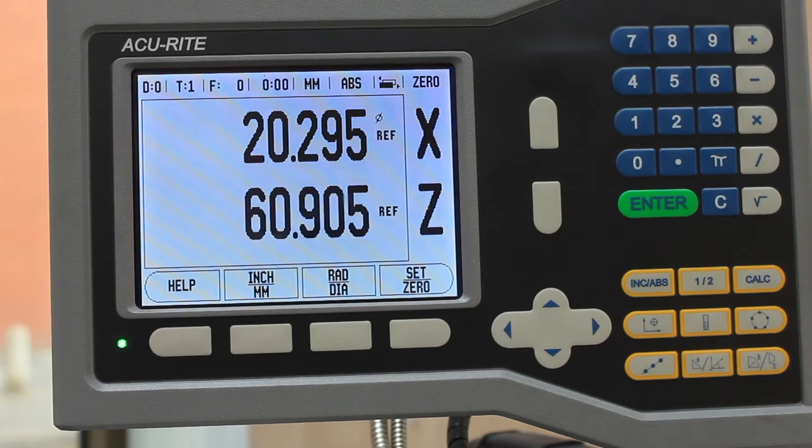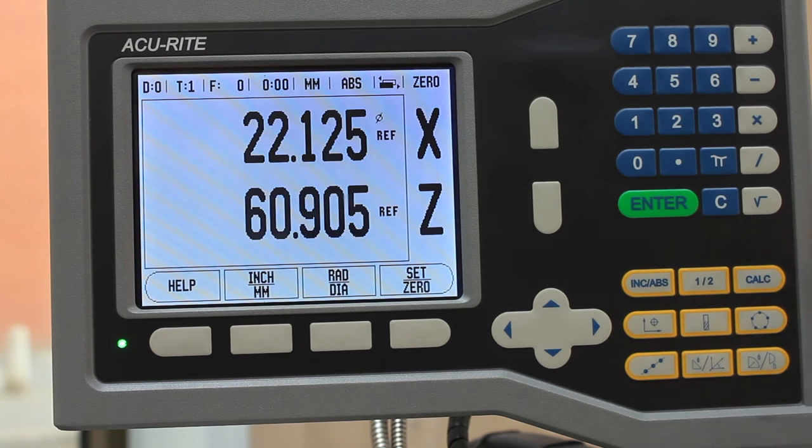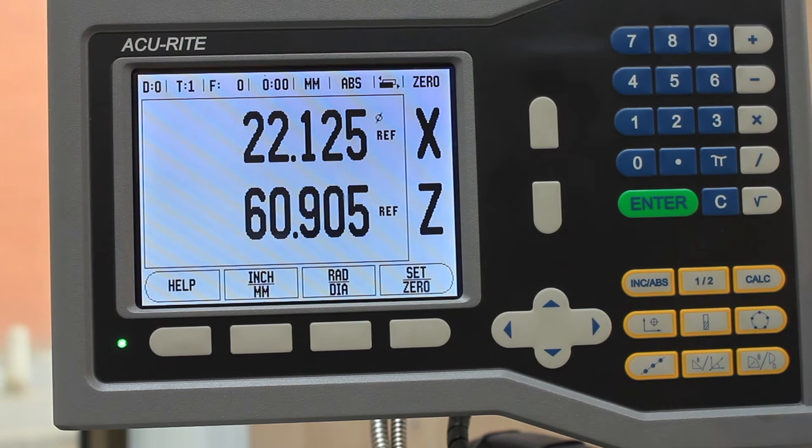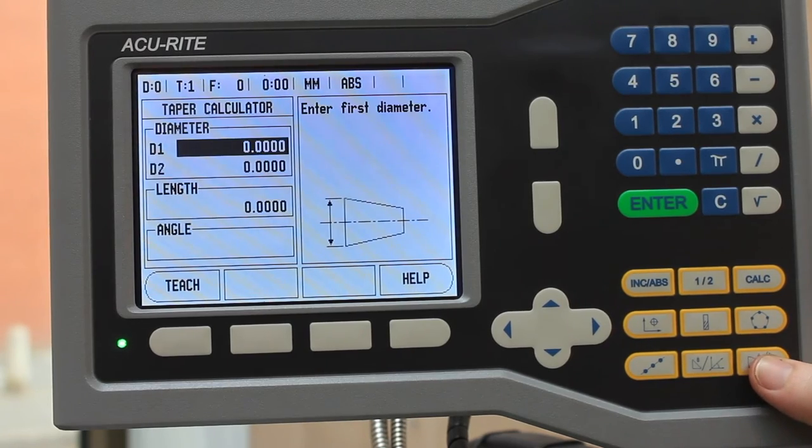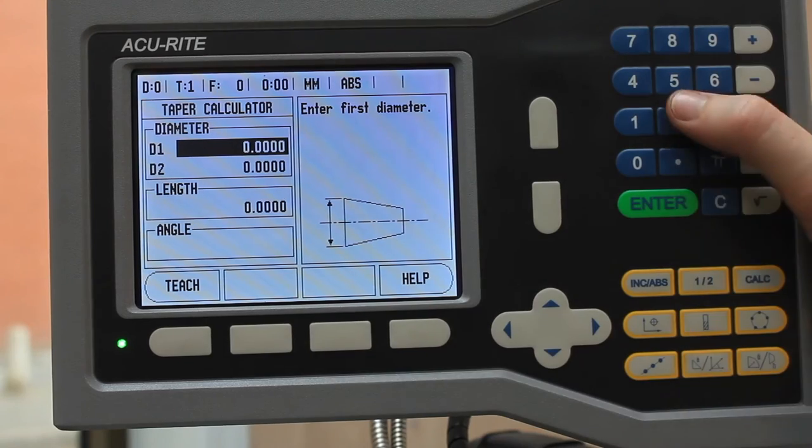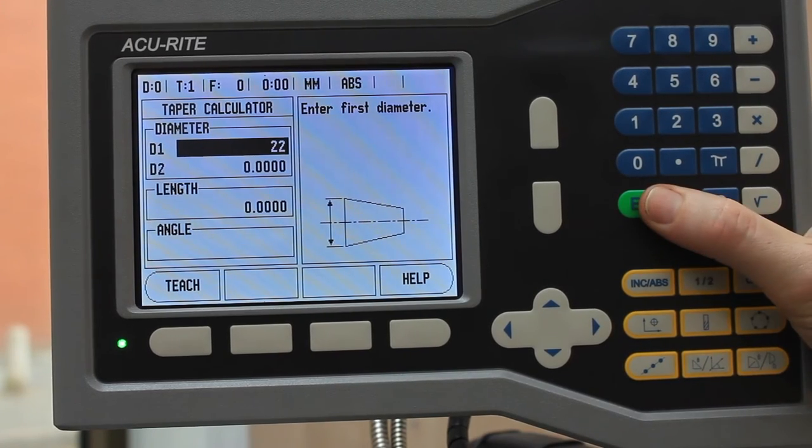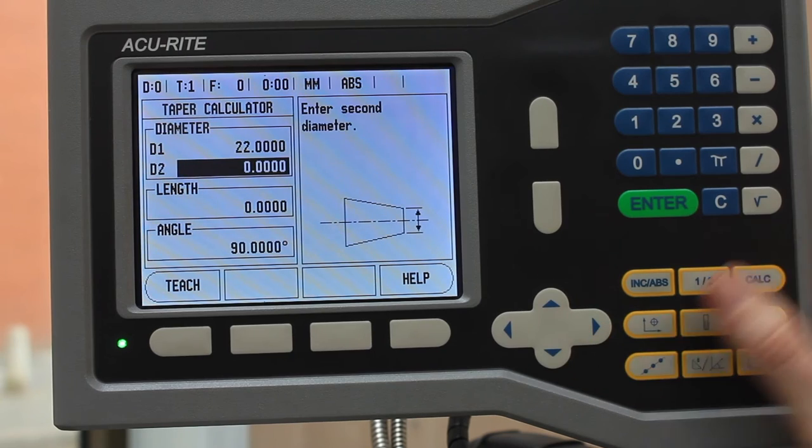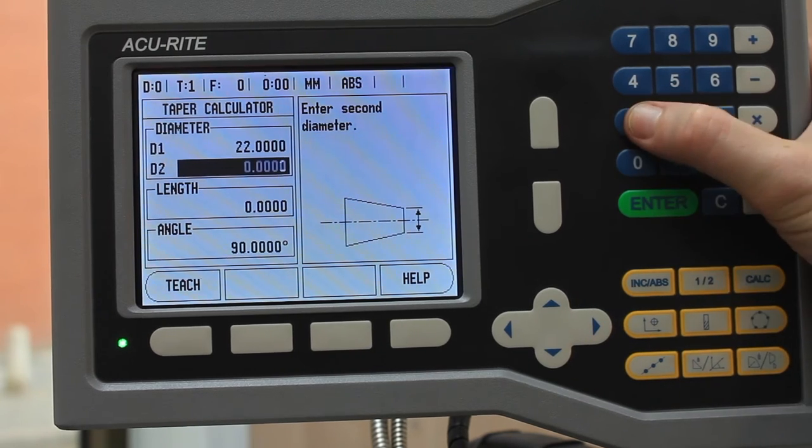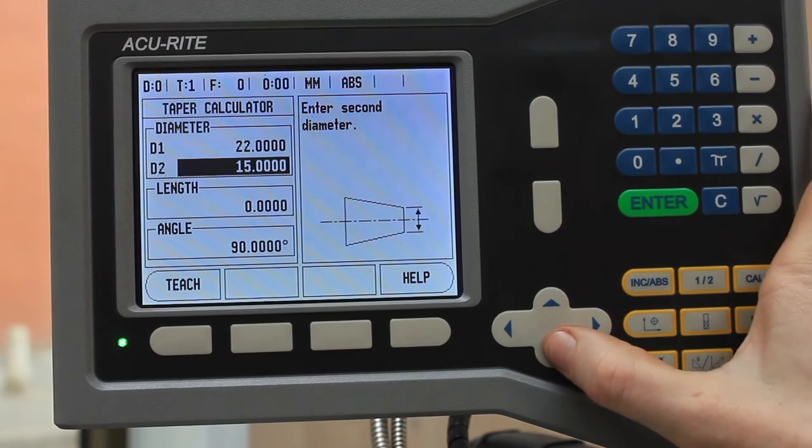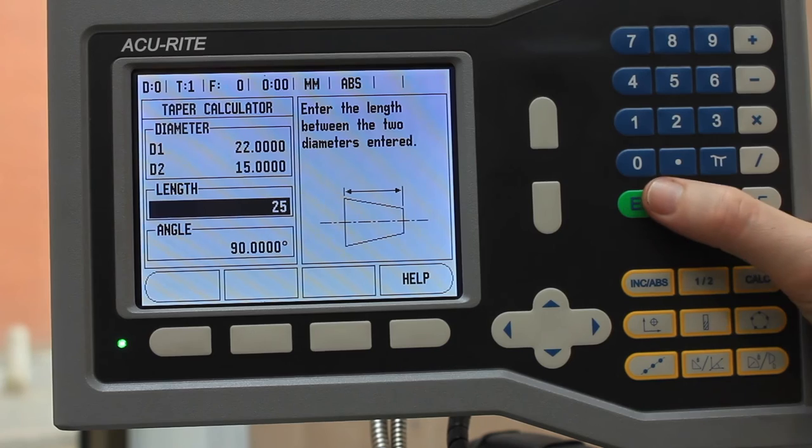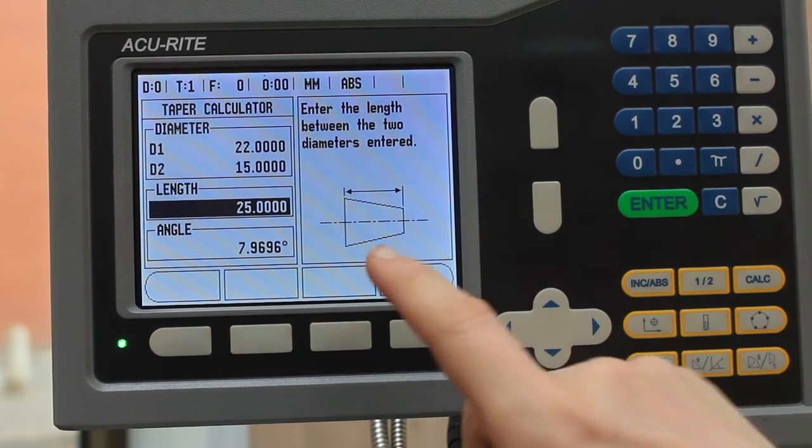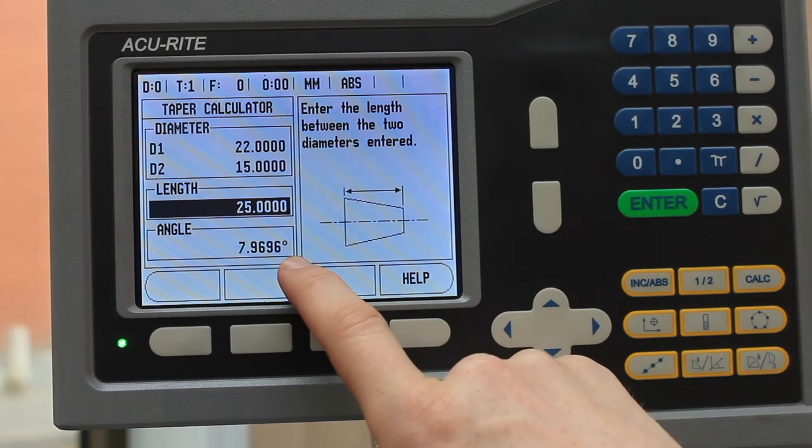We've now turned down to 22mm and just adjusted the x-axis there. We'll put in a taper, so we'll use the taper turning calculator here. We'll put our first diameter, which is the major diameter, leave that at 22. Second diameter we'll taper down to 15mm, and we'll do that over a length of 25mm. It's going to tell us the angle that we need to offset the compound slide.